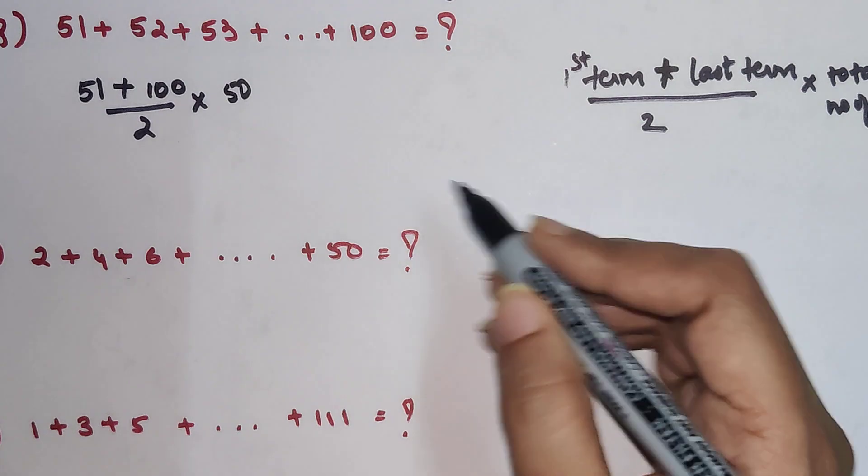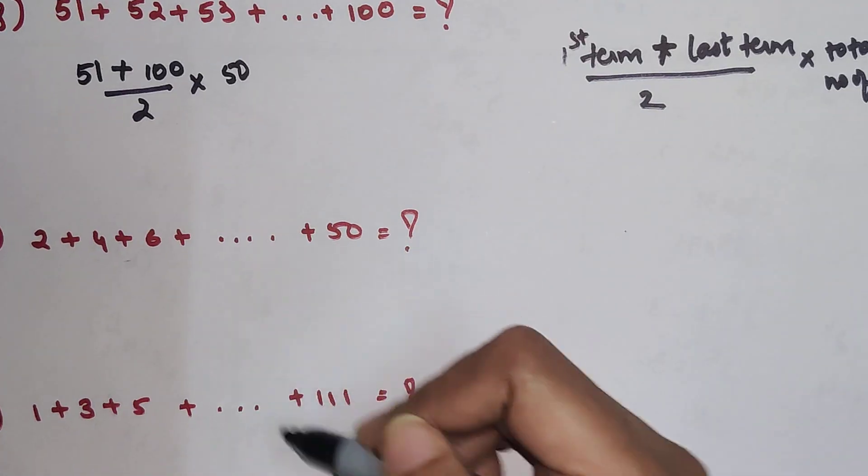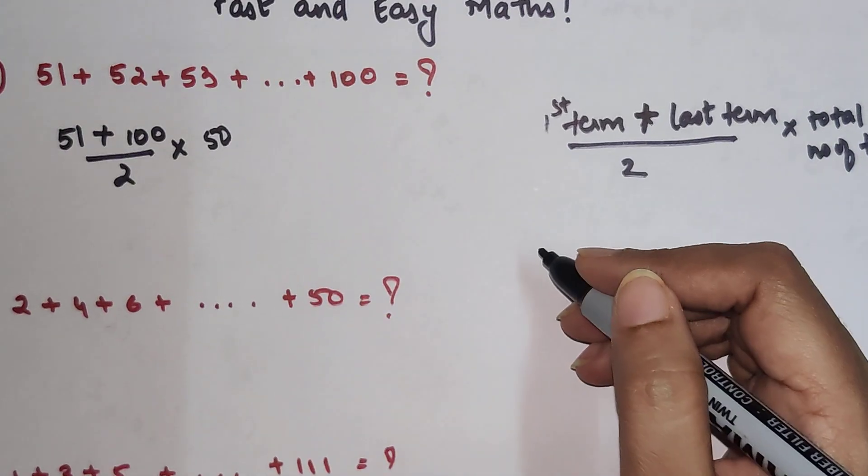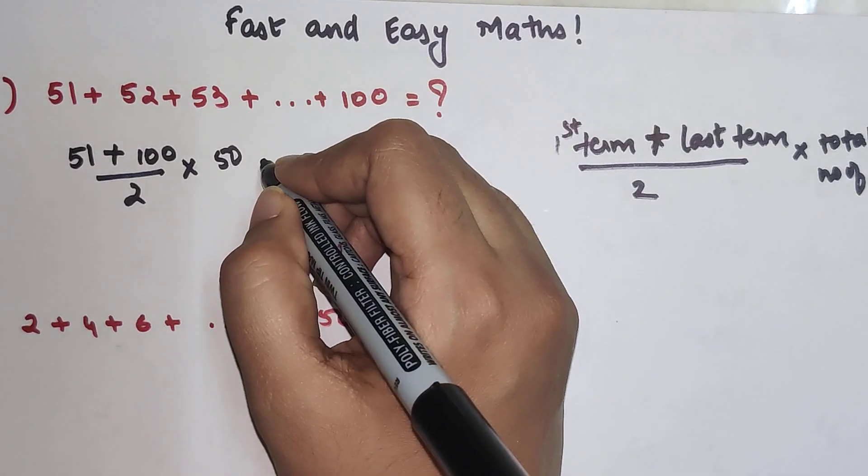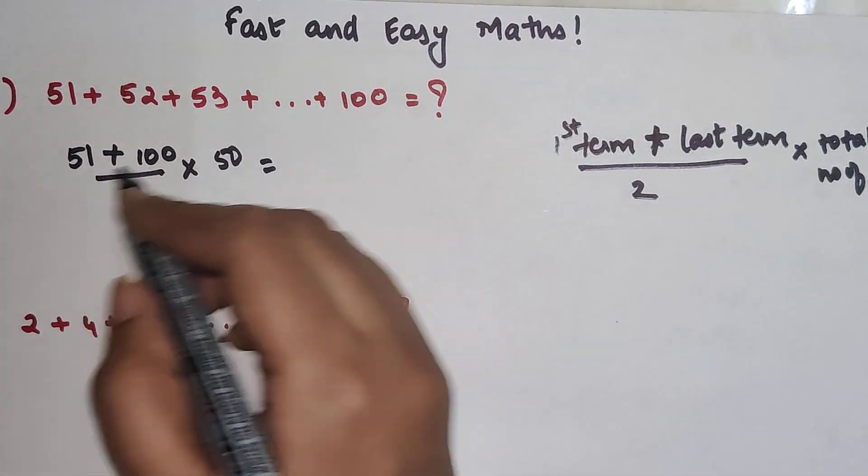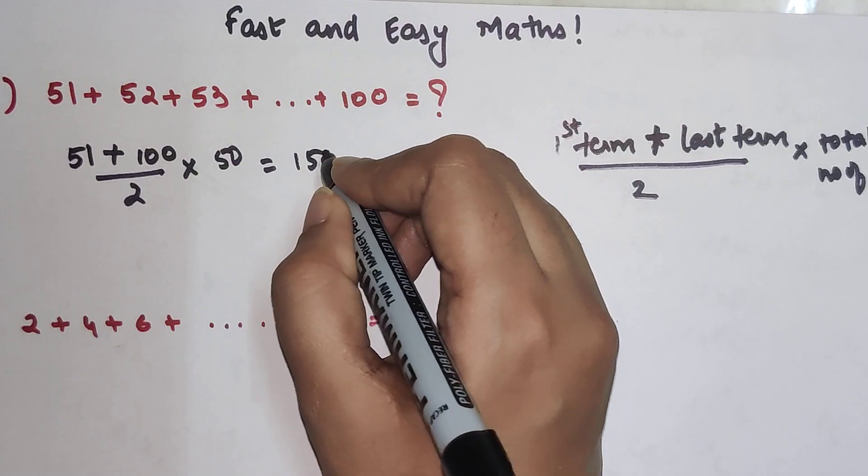This particular formula will change for the other examples. I'll teach you what to do in those cases. So here we have 51 plus 100, which is 151, divided by 2 times 50.